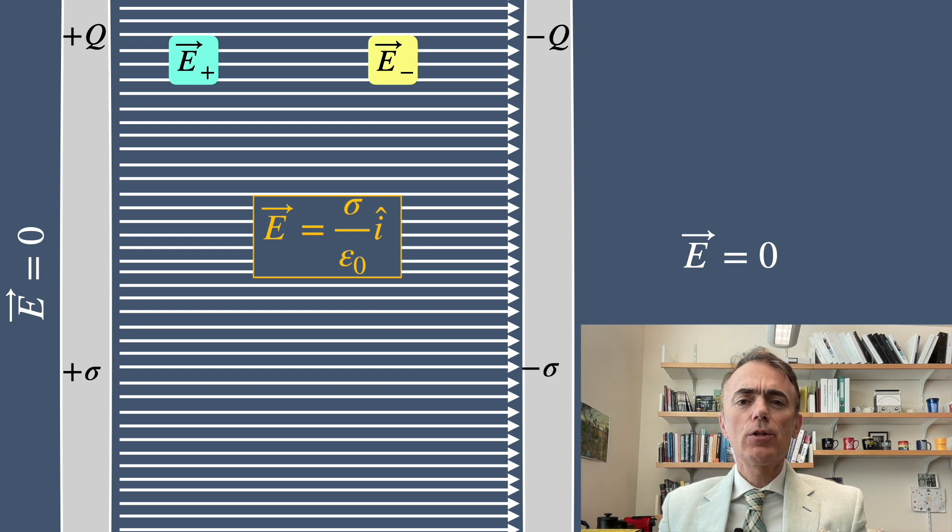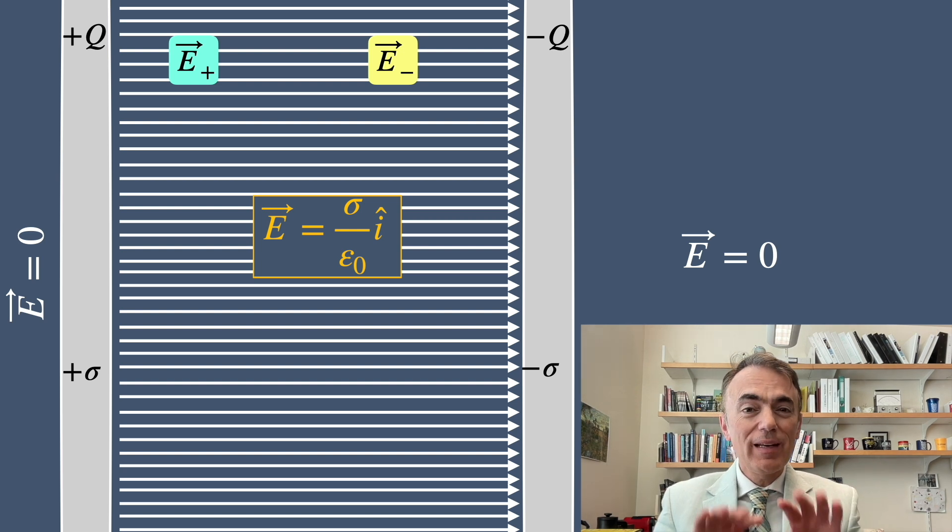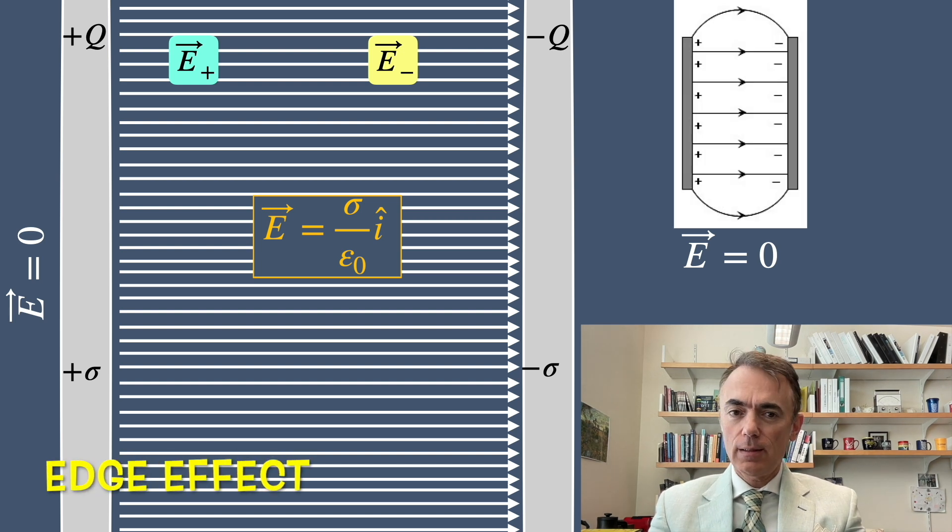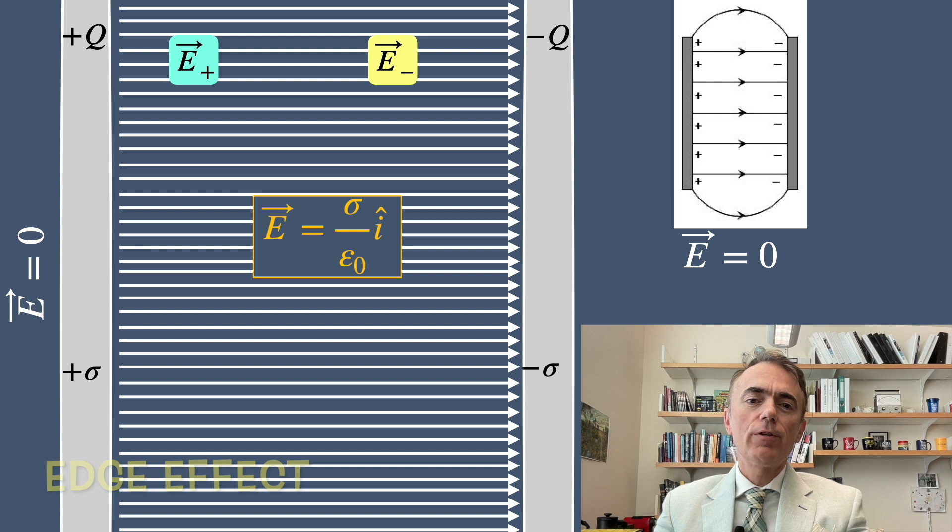It is worth noting that this calculation assumes we are dealing with ideal plates that are infinitely large. In real capacitors the electric field is not perfectly uniform near the edges. This phenomenon is called the edge effect. However, as long as the plates are much larger than the distance between them the edge effects are minimal and we can safely use our result for most practical purposes.